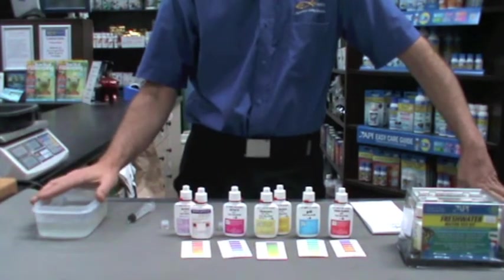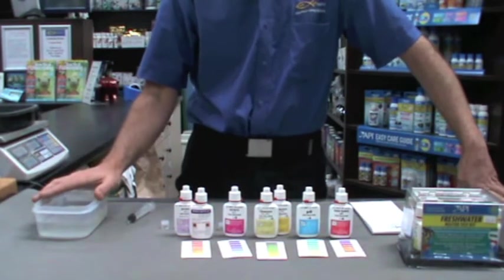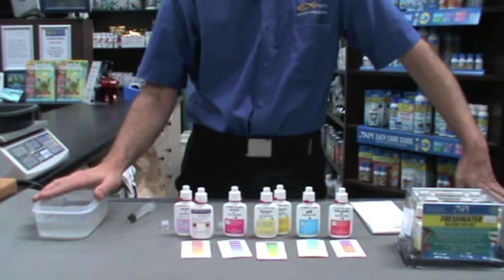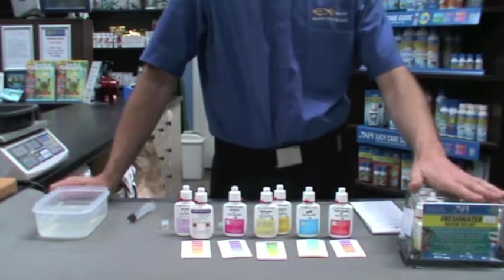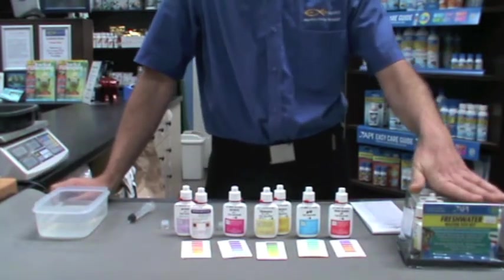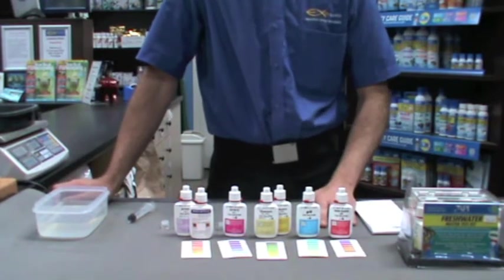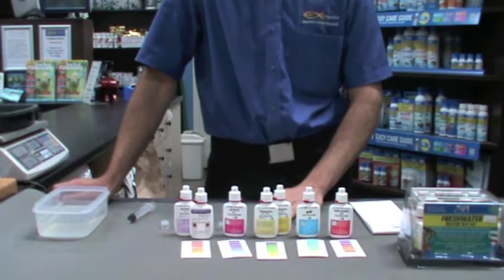Okay, today we're going to learn how to do a water test and carry out a full range on your average tropical tank. We're going to use the API master test kit and run through each test: pH, ammonia, nitrite, and nitrate.